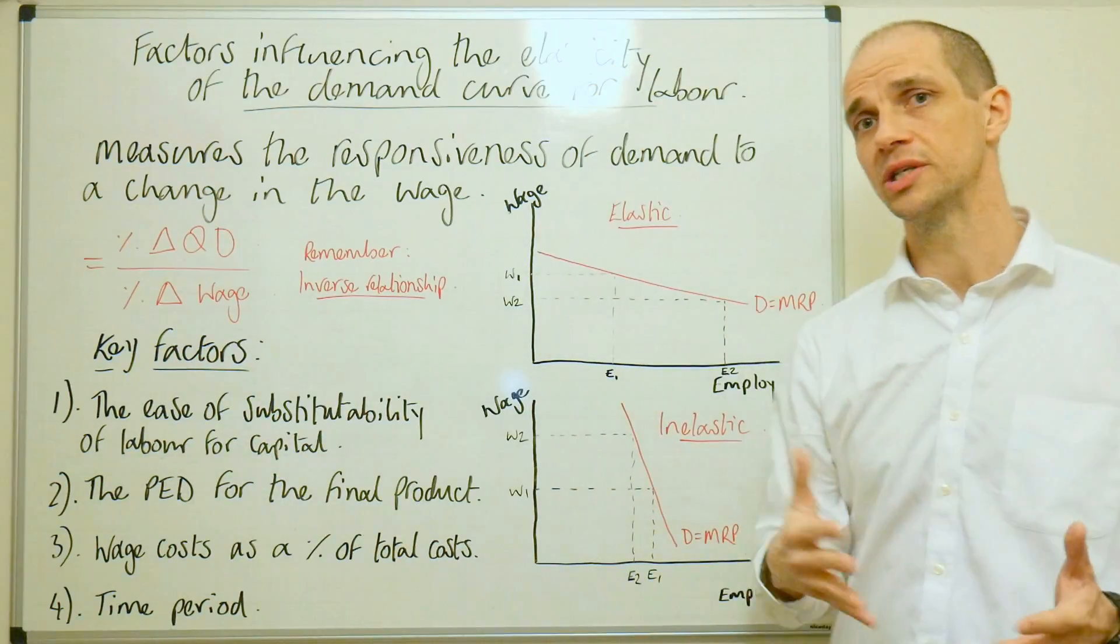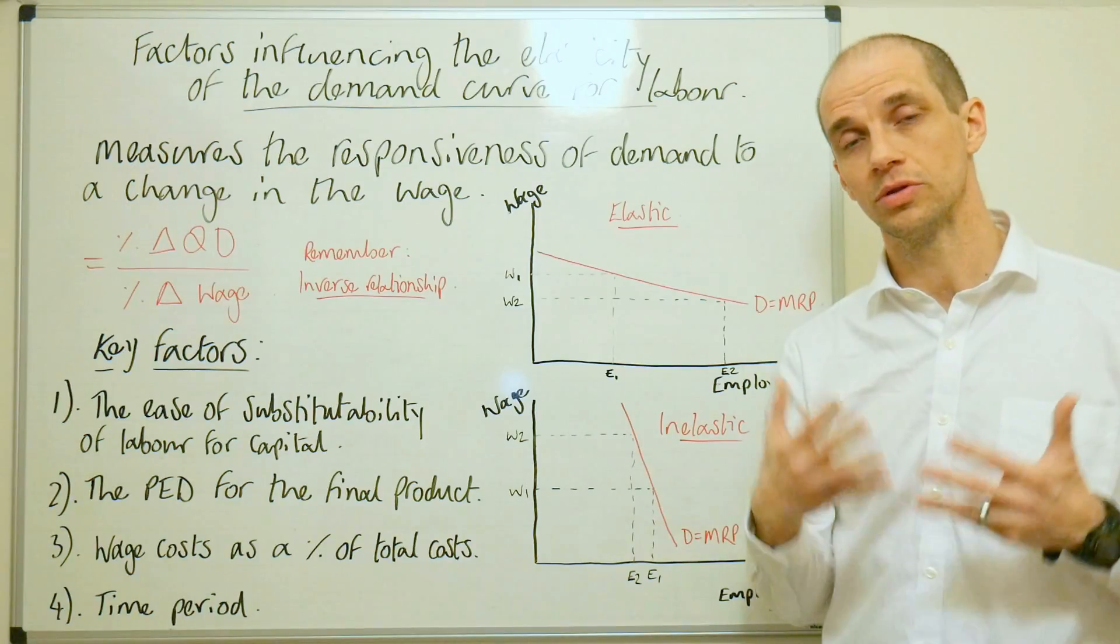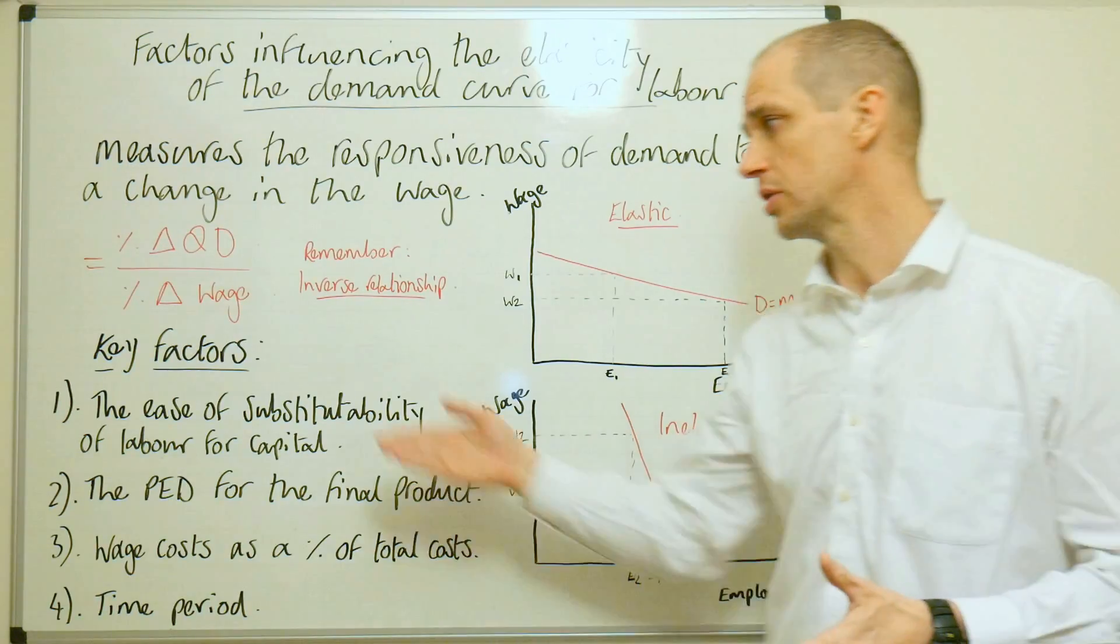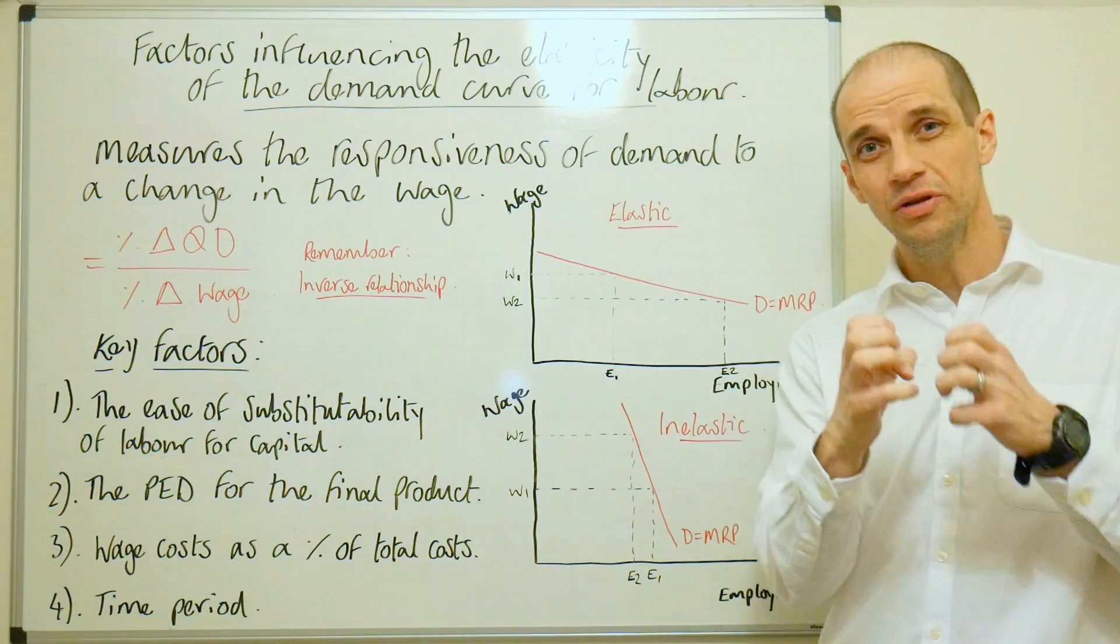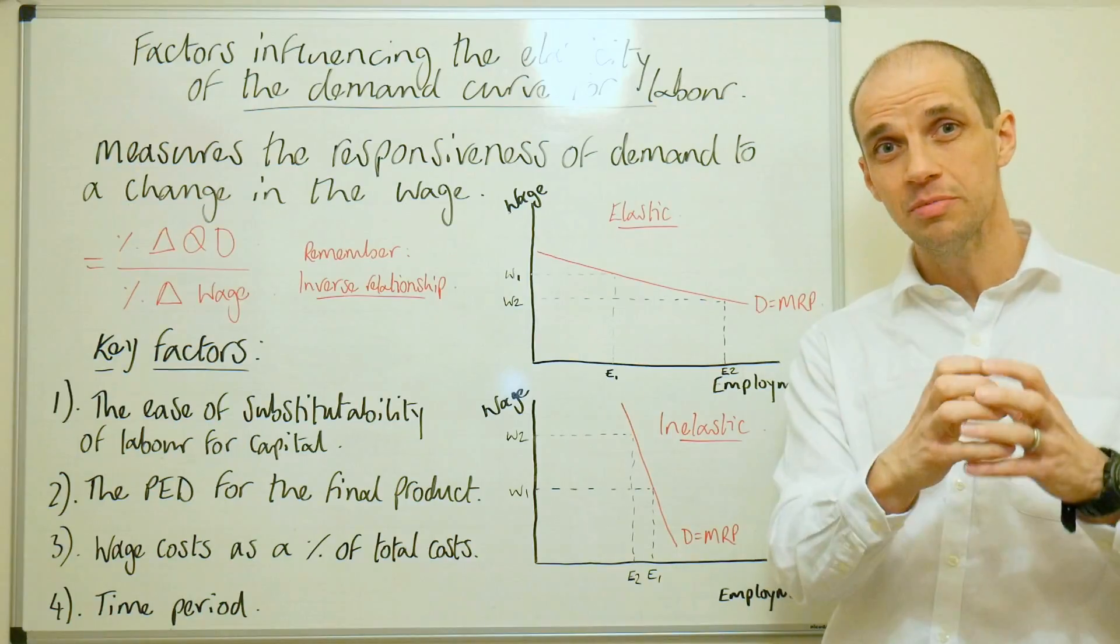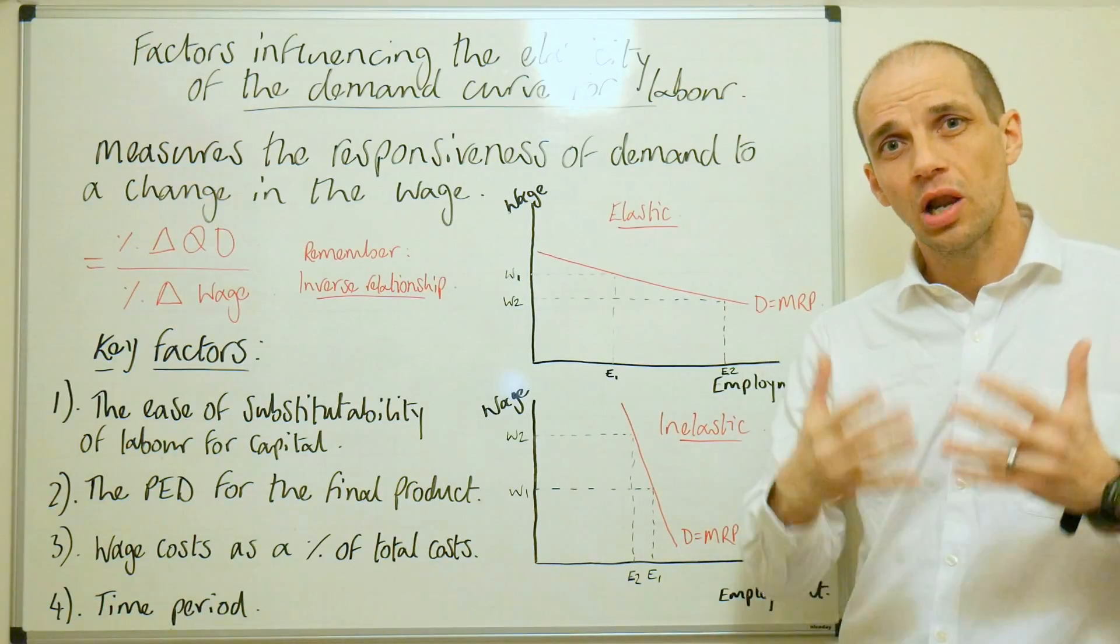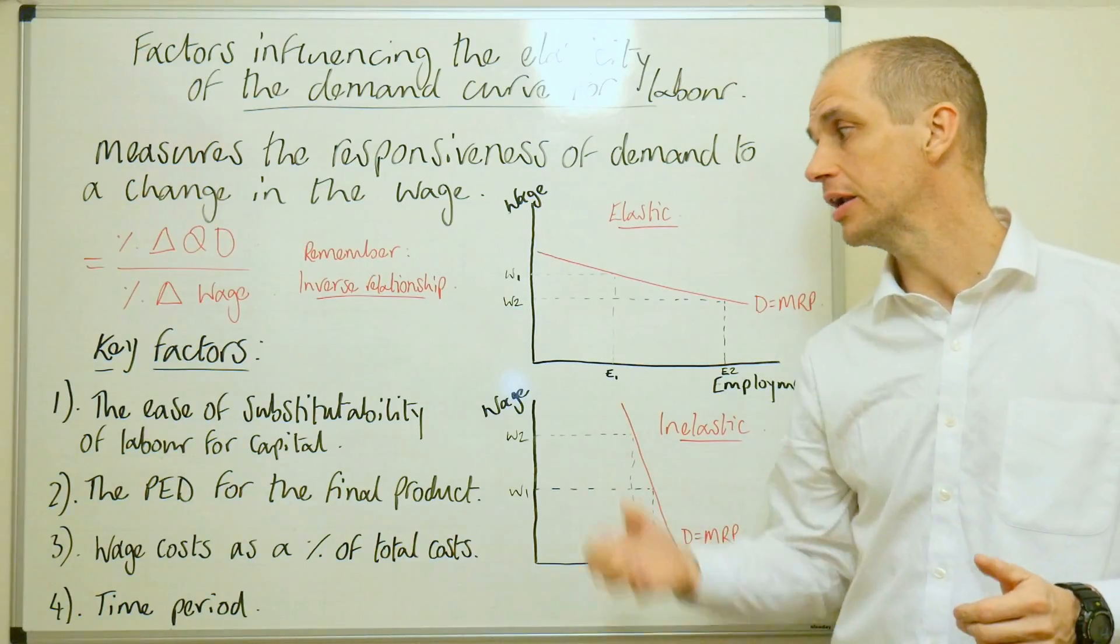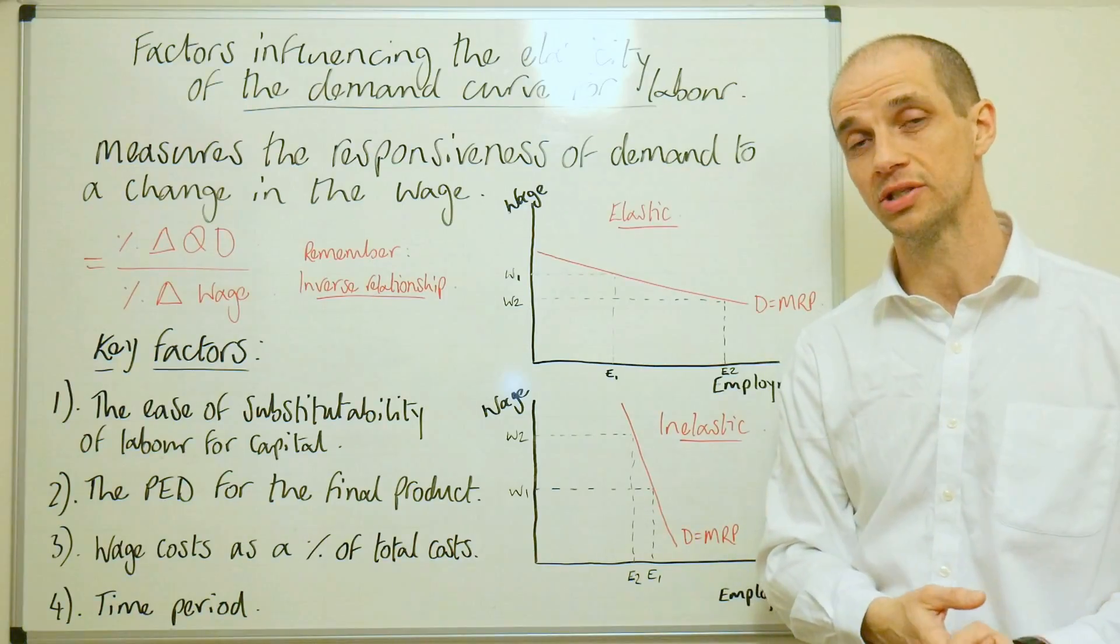First point I've noted down here is really about the ease of which you can substitute labor for capital. So the ease of substitutability of labor for capital. So if you can easily substitute labor for capital goods, well, why wouldn't you? In the longer term, they're going to be far more cost effective and ensure that you can actually increase productivity in most circumstances as well.